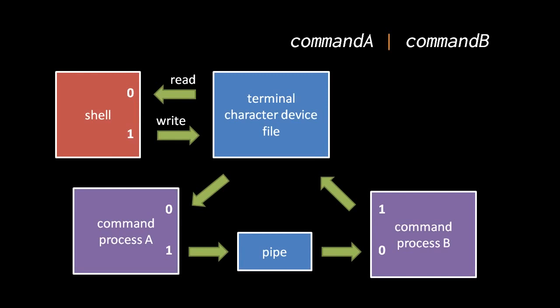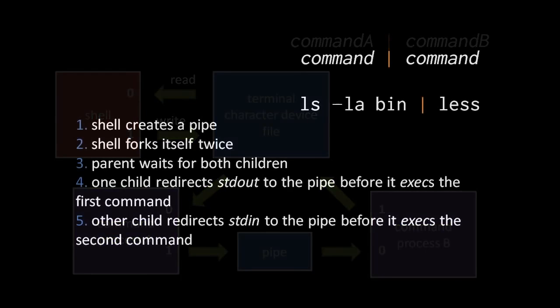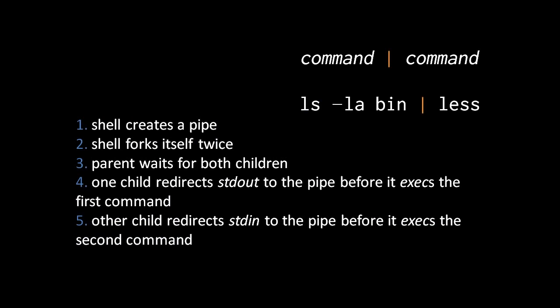Redirection in UNIX makes possible another trick called pipelining. When in the shell we separate two commands with the pipe character — usually found on the same key as the backslash — it's easy to mistake for a lowercase L but it's a vertical bar. The shell runs these two commands in parallel and redirects the standard output of the first command to be read as the standard input of the second command. The reason we need a pipe is that processes can't read and write from each other directly like files.